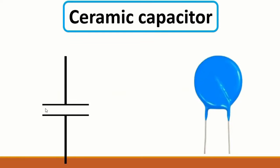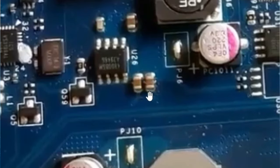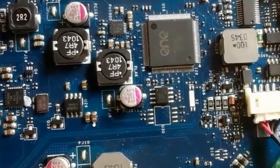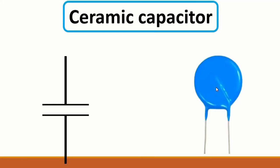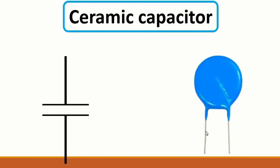Then we have the ceramic capacitor again - this is its symbol. It could be a through-hole ceramic capacitor. These are sometimes called pF capacitors because their values are usually in picofarads. SMD ceramic capacitors are found in motherboards for computers and laptops, while through-hole ceramic capacitors are found in switch mode power supplies.